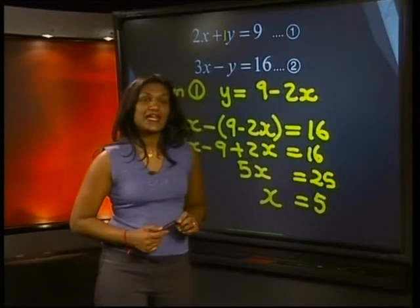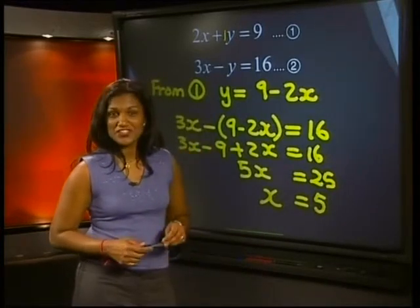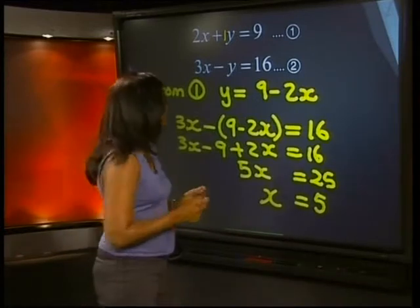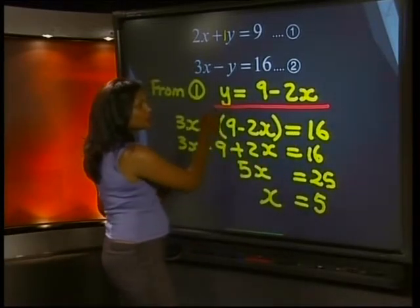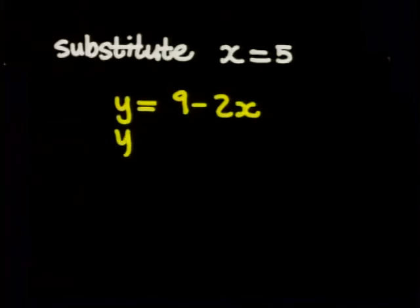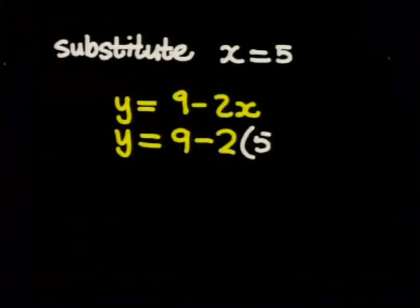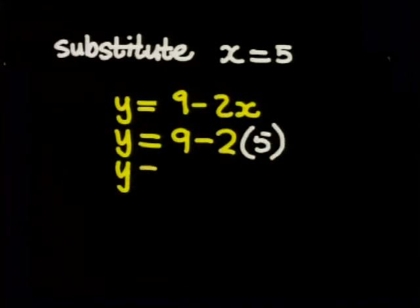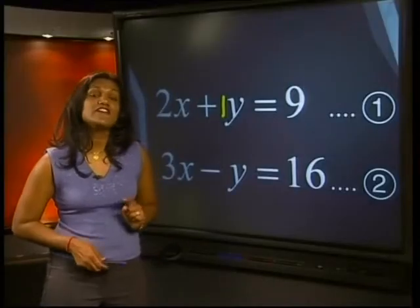Now what do you do next? We substitute this result into any of the equations. Now which one would you use? I'm going to use this one here, where y is written on its own already. Now y is equal to 9 minus 2 times 5, which is 9 minus 10. So y is equal to negative 1.